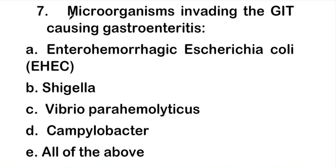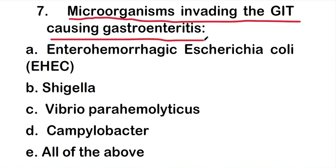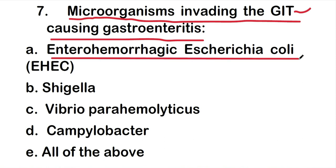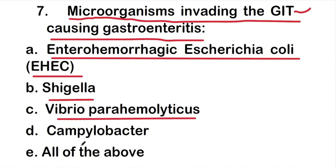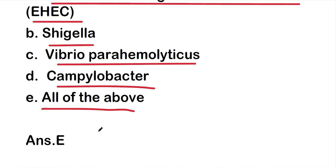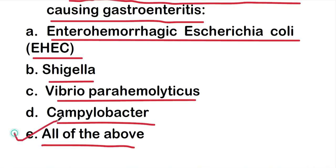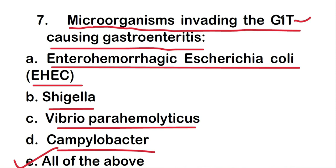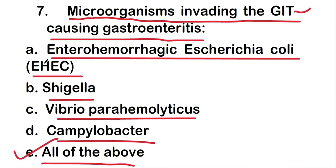Question 7: Which microorganisms invade the gastrointestinal tract (GIT) causing gastroenteritis? The options are enterohemorrhagic E. coli (EHEC), Shigella, Vibrio parahaemolyticus, Campylobacter, or all of the above. The right answer is option E: all of the above. EHEC, Shigella, Vibrio parahaemolyticus, and Campylobacter all invade the GIT causing gastroenteritis.